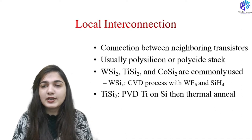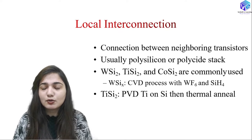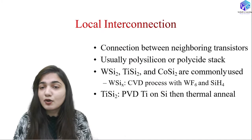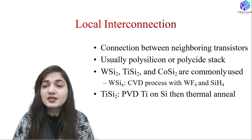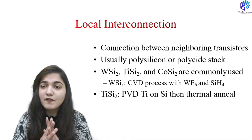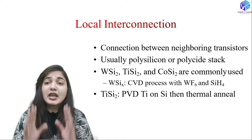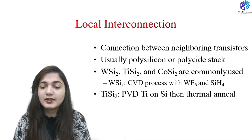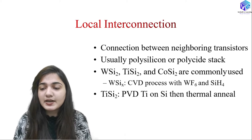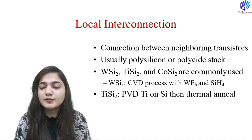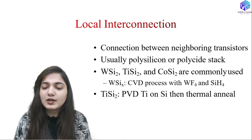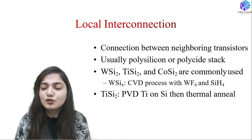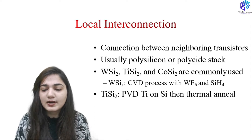Now coming to the local interconnection. On a given chip we have millions of transistors, and all of them must be connected. With the help of interconnections we are actually connecting the transistors. If we are connecting neighbouring transistors it is called local interconnection — the connection between neighbouring transistors. Usually polysilicon or a polyside stack is used for local interconnection. We can use tungsten silicide, titanium silicide, or cobalt silicide, which are the most commonly used compounds for local interconnection formation.